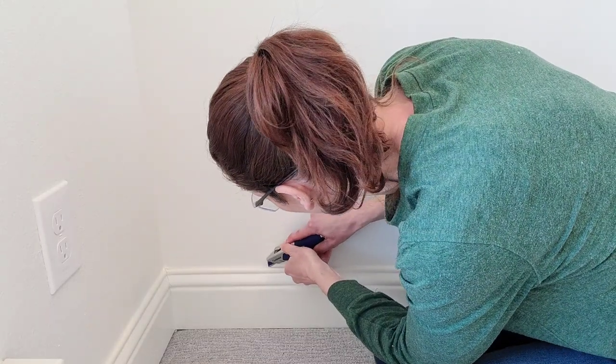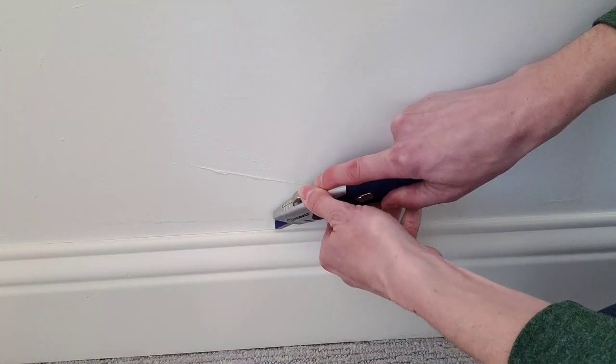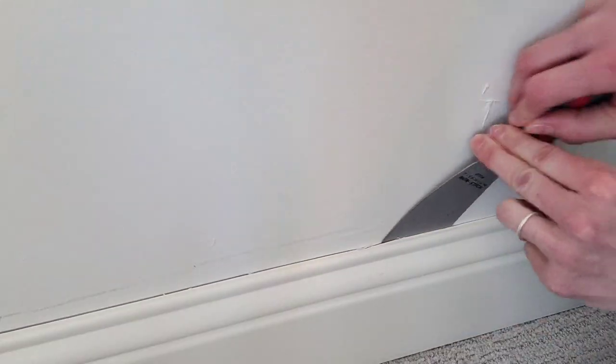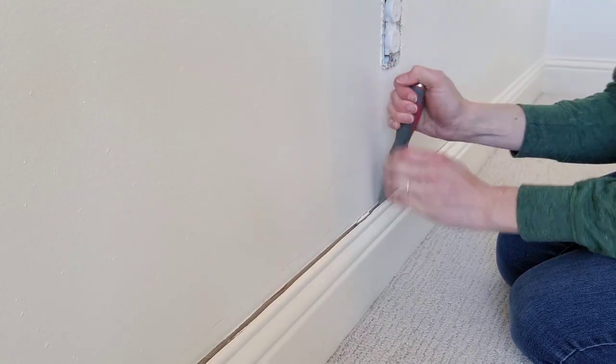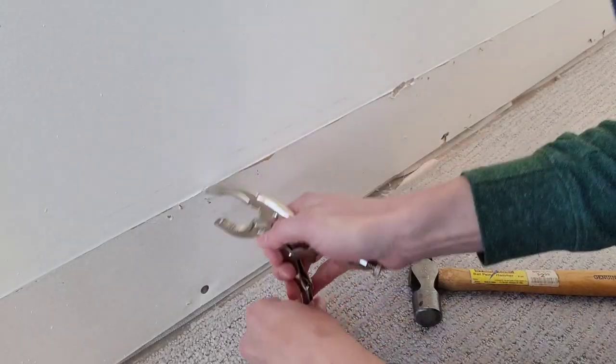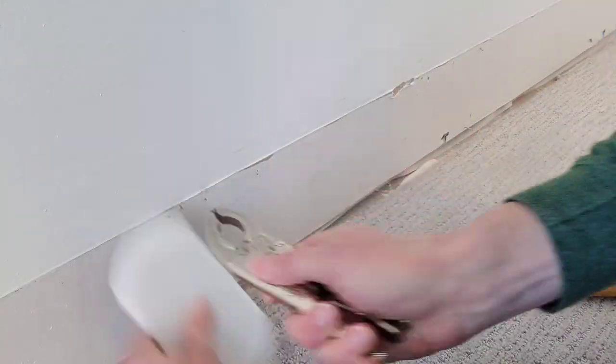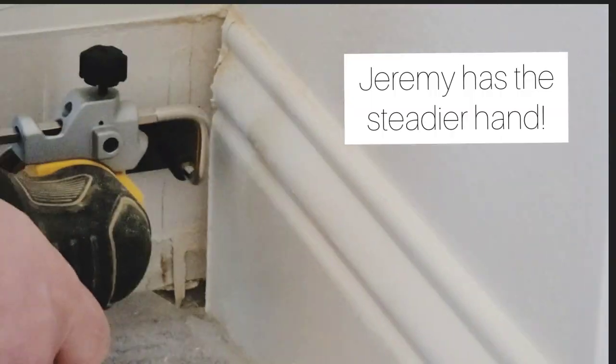The first step in removing the baseboards is to go ahead and cut along between the trim and the wall. You're cutting the caulking and the paint, and then I used a putty knife to carefully separate it. Just make sure you don't damage your walls or the trim piece. The next step is to deal with the trim on each side.